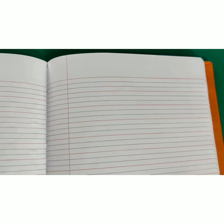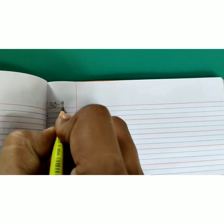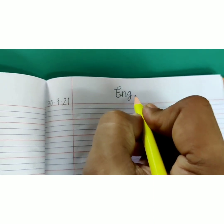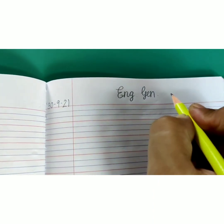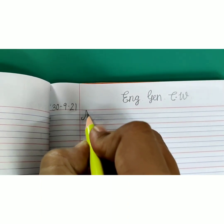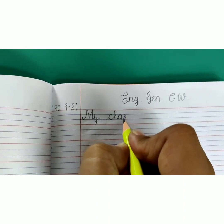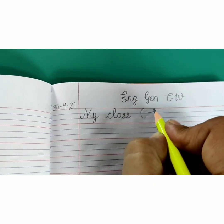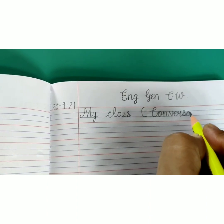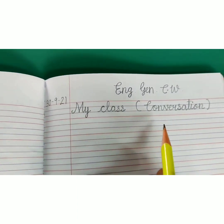Today's class work is my class conversation. Open your notebook and write down today's date. At the top right, write: cursive capital E-N-G English dot G-E-N general dot C dot W dot English general class work. Near the margin, write down heading: cursive capital M-Y, my, one finger space, C-L-A-double S, class, in bracket cursive capital M-Y C-L-A-S-S C-O-N-V-E-R-S-A-T-I-O-N. Bracket over: my class conversation.